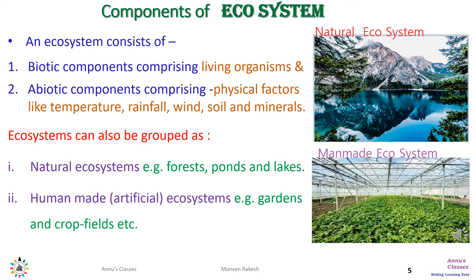Ecosystems can be both natural and man-made. Forests, ponds, and lakes are examples of natural ecosystems, whereas gardens, crop fields, etc. are human-made ecosystems. Human-made ecosystems are well arranged but lack the balancing effect of the natural ecosystem.